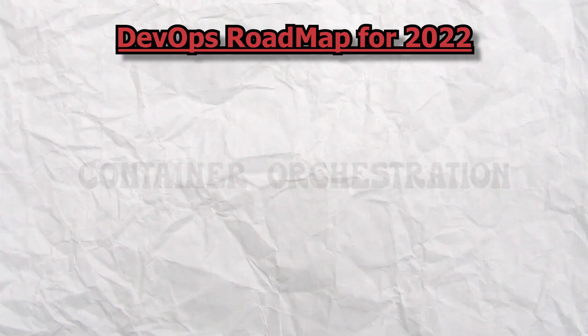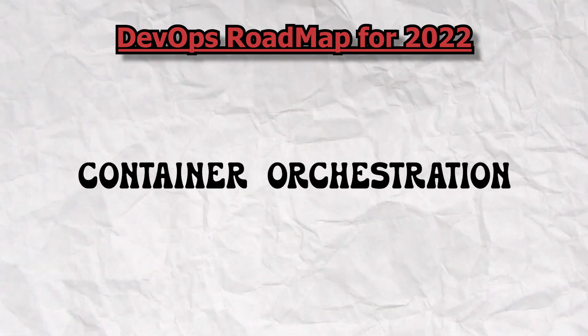Segment ten is container orchestration. There are two main tools: Kubernetes and OpenShift. Kubernetes is the foundation — even OpenShift runs on top of Kubernetes. My recommendation: install Minikube or Rancher on your laptop, understand how things work, create your first Spring Boot 'Hello World' application, containerize it, deploy it to your local Kubernetes cluster, and see how beautifully everything works. Kubernetes is the king of container orchestration.